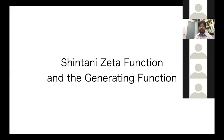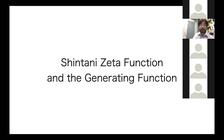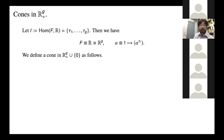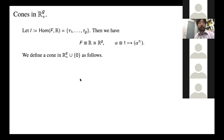Next I want to talk about Shintani's zeta function and the generating function. The Lerch zeta function itself doesn't a priori have a good generating function. What we want to use is the generating function for Shintani's zeta function studied by Shintani. We let I be the embeddings of F into the reals. Since the degree of F is g, we have g embeddings, and we fix an order, which means F tensor R is isomorphic to R^g, the g-dimensional real space.